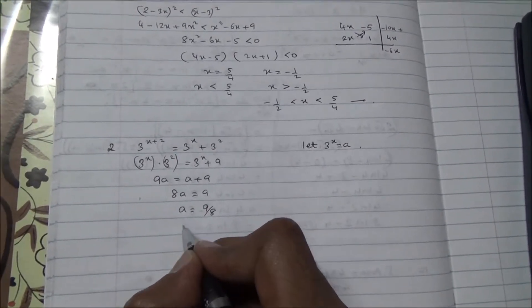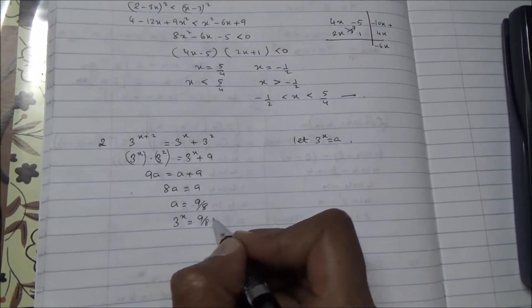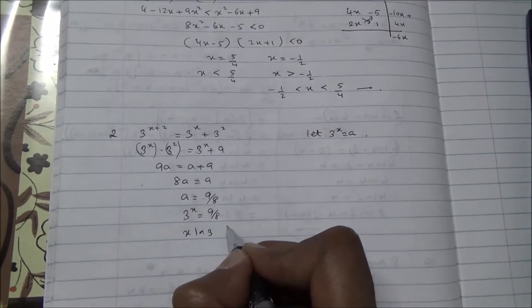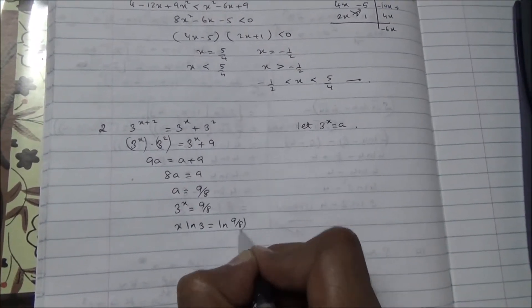We know that a is equal to 3 to the power of x, so 3 to the power of x is equal to 9 over 8. In other words, using logarithms, x ln 3 is equal to ln 9 over 8.